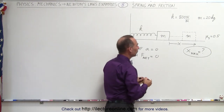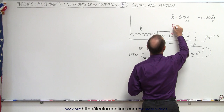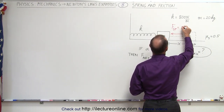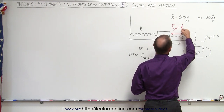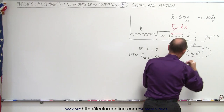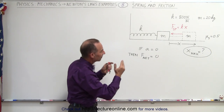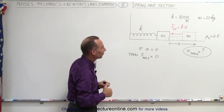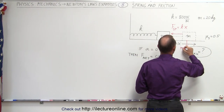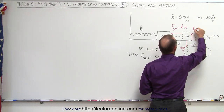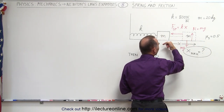Once it's extended, the spring is going to be pulling to the left. The force of the spring equals the spring constant k times the distance it's been extended from the equilibrium point. At the same time, there is a force due to gravity, which is mg, which means there's a normal force pushing back N, equal to mg. What will prevent the mass from accelerating to the left?